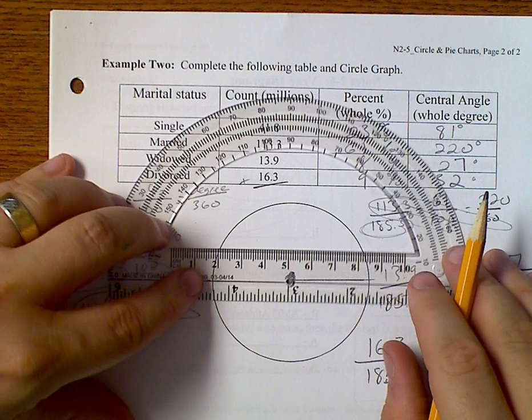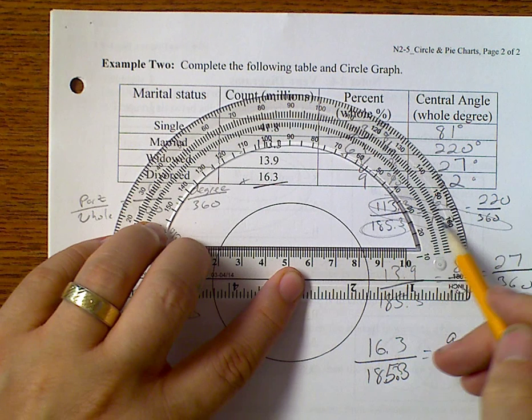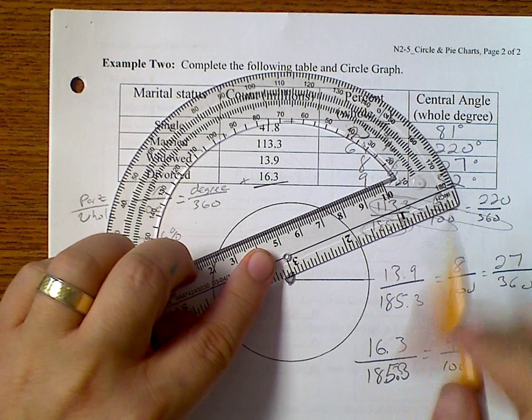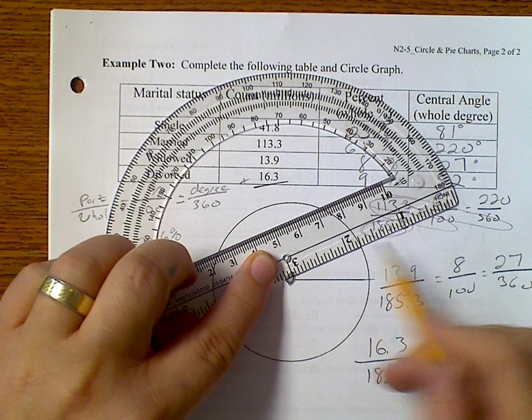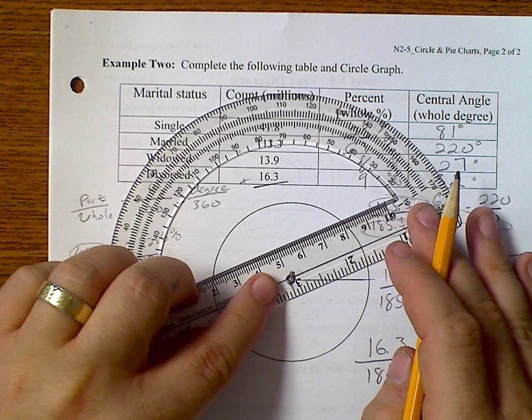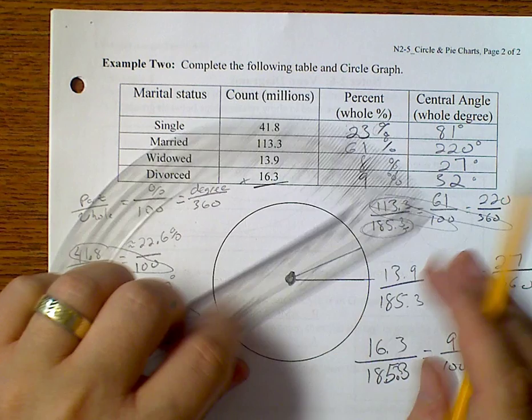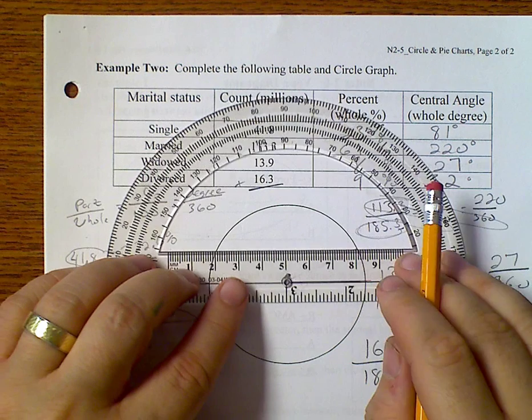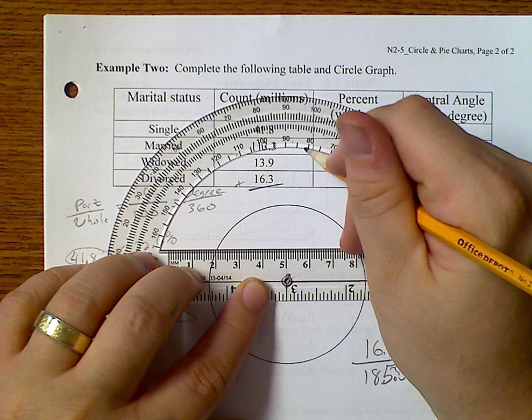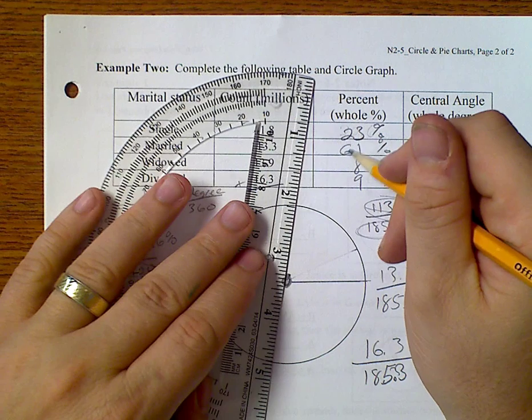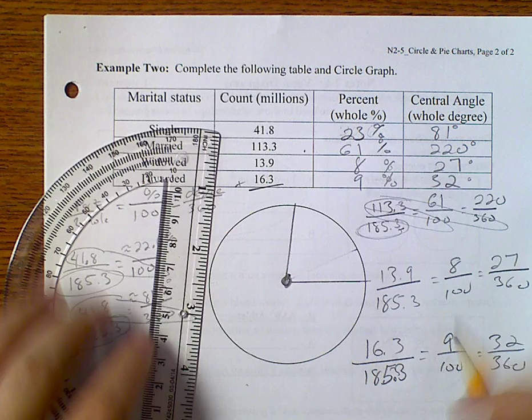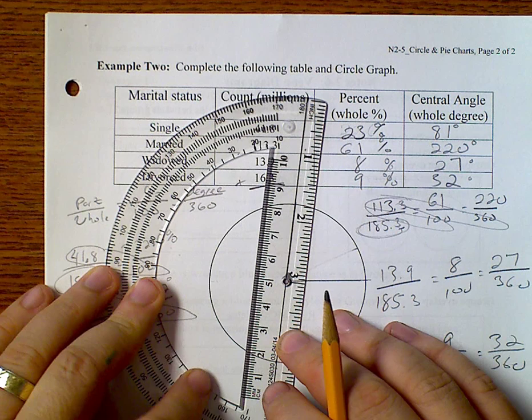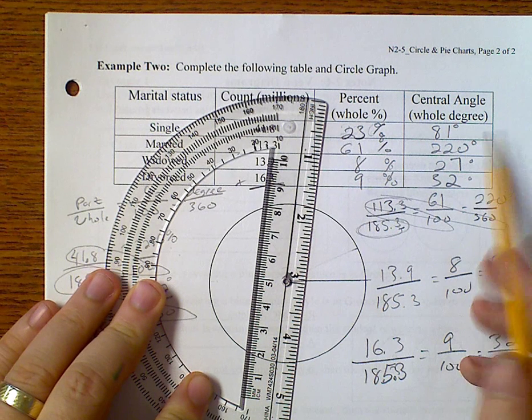And draw my starting point. And I'm going to start by going 23 degrees. It's going to be about there. And then from 23 degrees, I need to go 61 degrees. Not 23 degrees. 81 degrees. It's going to take us about there. From 81, we need to go to 20. Well, that's more than 180. So we'll just save that one for last. So we'll do the 27 degrees.